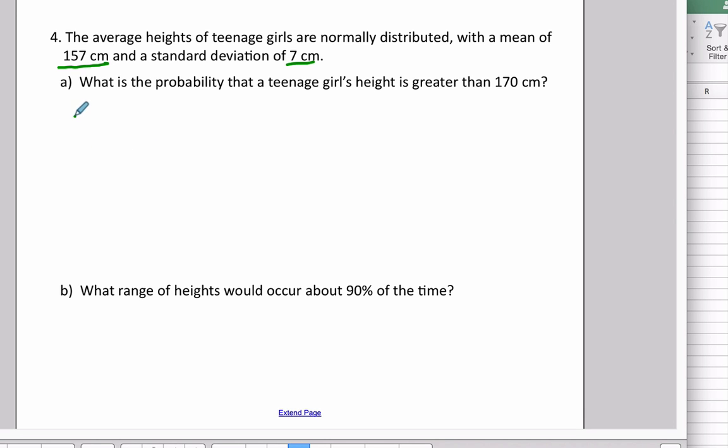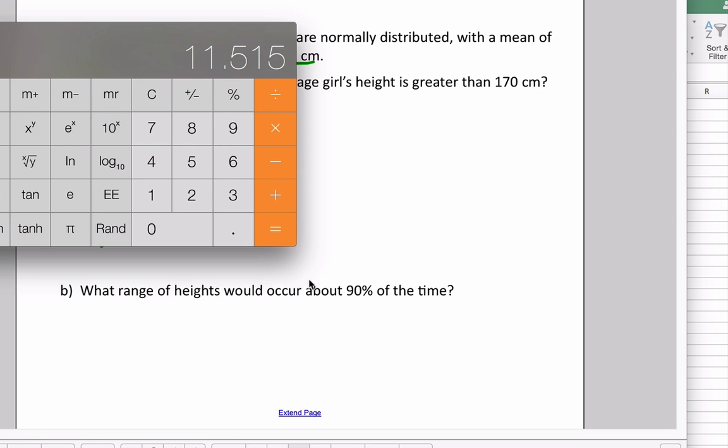So we can calculate the Z-score very easily. Our data value is 170 minus the mean, which is 157, divided by 7. So this is equal to 13 over 7, which corresponds to the Z-score of 1.857.